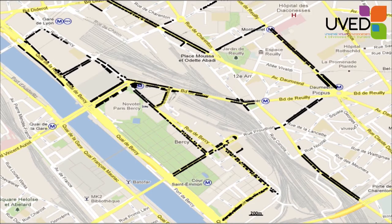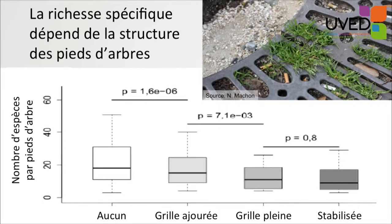On this map, each black dot is a tree that was analyzed every year since 2009. What the study revealed was that there are a number of species growing at the bottom of trees — all the more if there is room available. There are many species when the bottom of the tree is easily accessible, and fewer if there is a grid with or without holes.